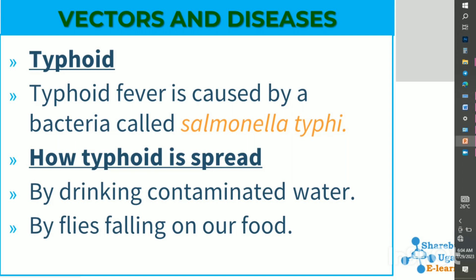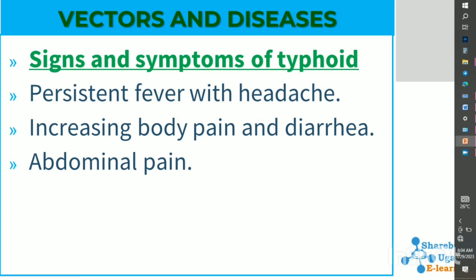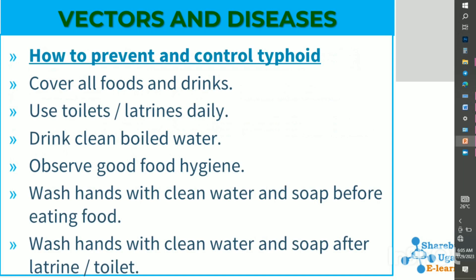Typhoid is spread by drinking unboiled contaminated water and by flies landing on our food. Signs and symptoms of typhoid include persistent fever with headache, increasing body pain, diarrhea, and abdominal pain. We can prevent typhoid by covering all foods and drinks, using latrines, and drinking clean boiled water.